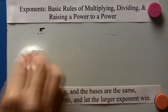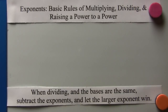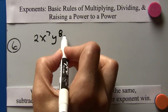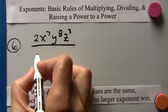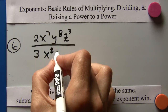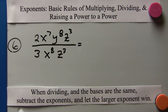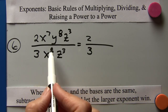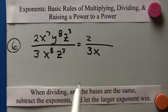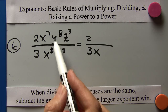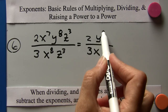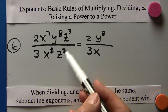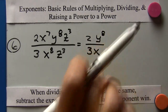One more division problem: 2x to the seventh y to the eighth z cubed divided by 3x to the eighth z cubed. The coefficients give us 2 over 3. For the x's, I have a 7 upstairs and an 8 downstairs; subtract — 8 minus 7 is 1, the larger wins, so x to the first in the denominator. The y variable only appears in the numerator, so it stays as y to the eighth. For the z's, 3 minus 3 is 0, so the z variable cancels out entirely. The answer is 2y to the eighth over 3x.